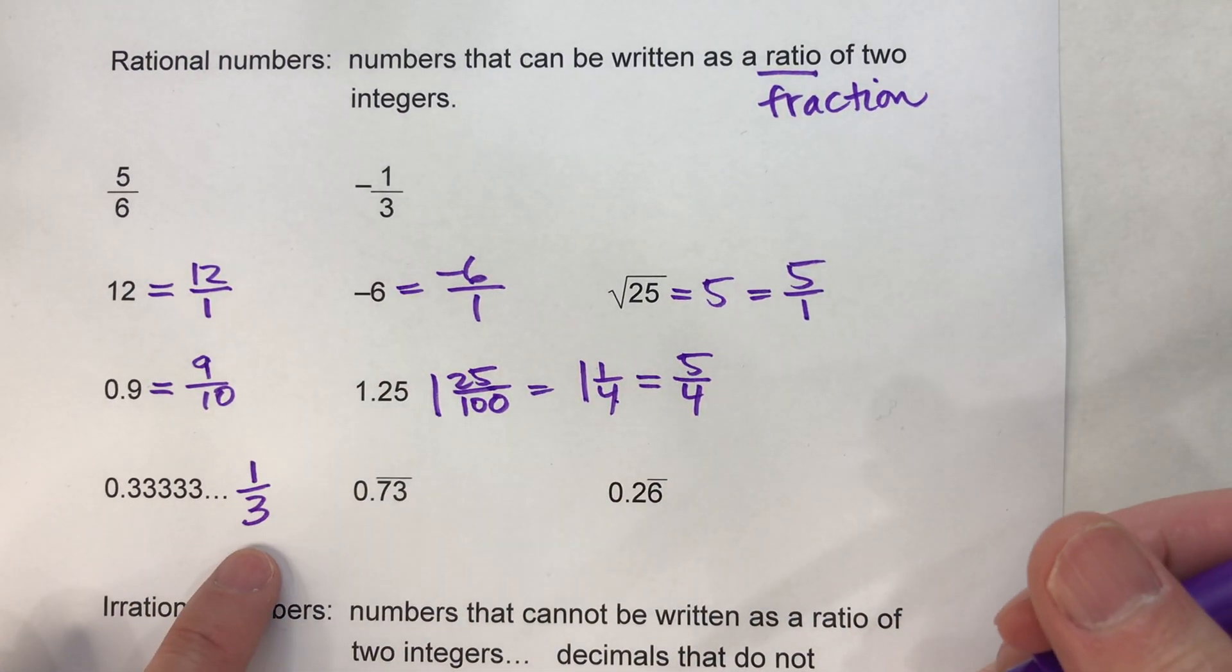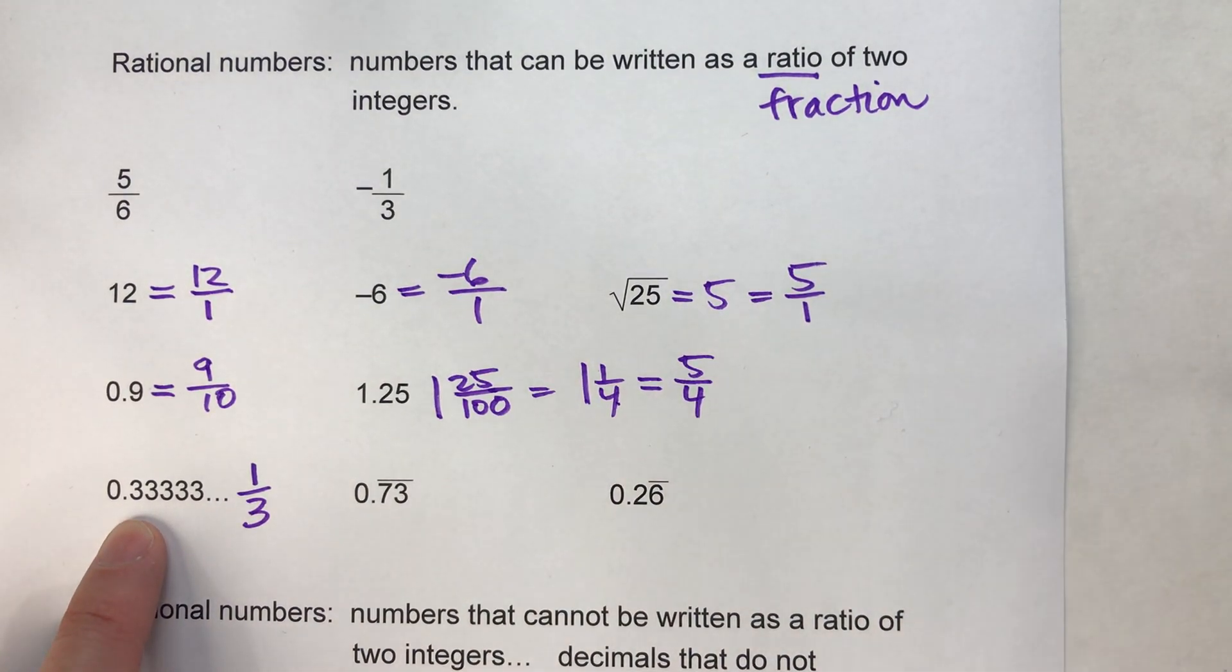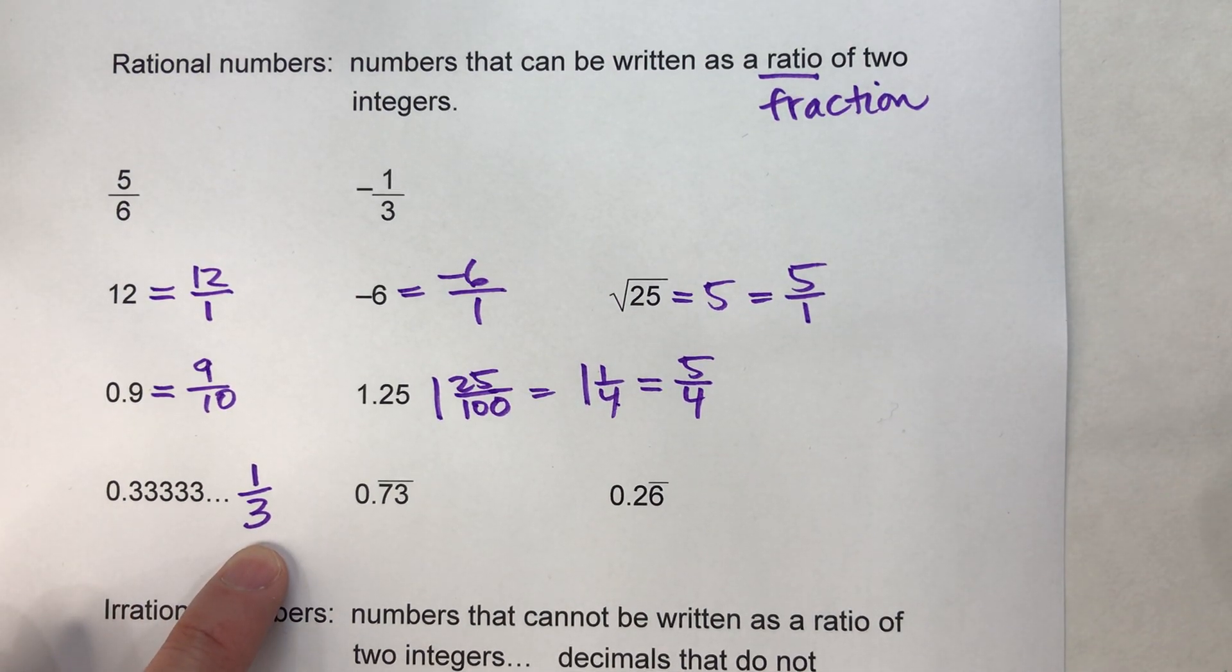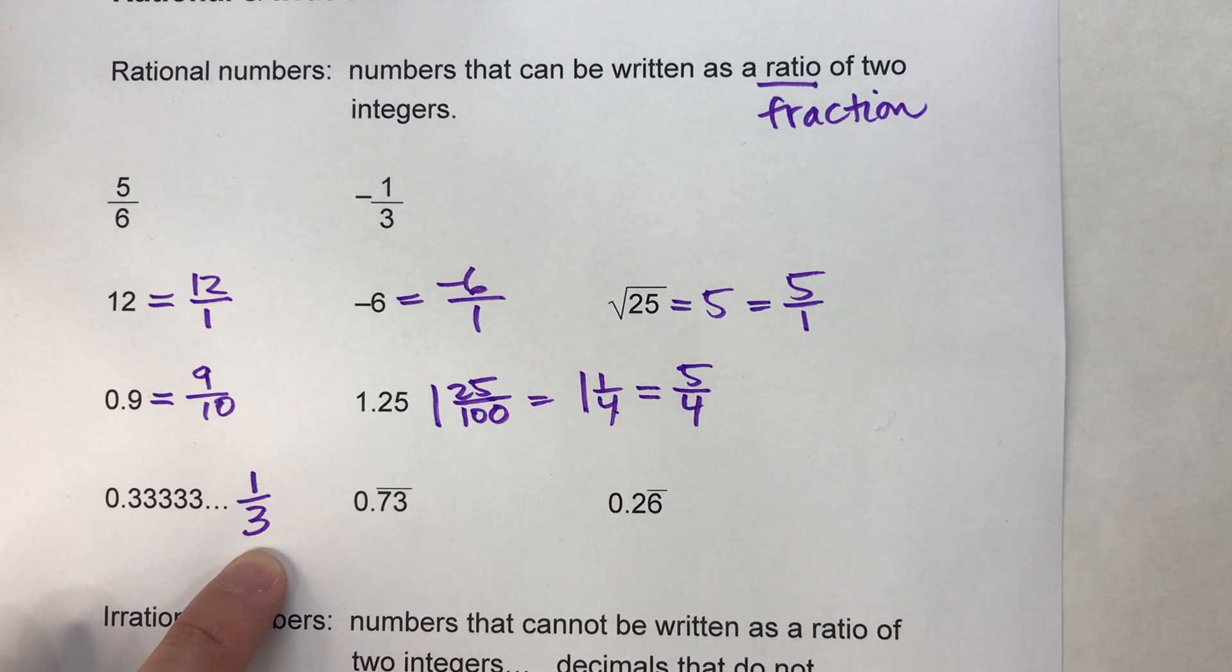Most people know that 0.3 repeating is 1/3. And because 1/3 is a fraction, we know 0.3 repeating must be rational because it can be written as a fraction.